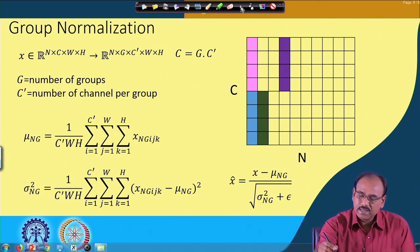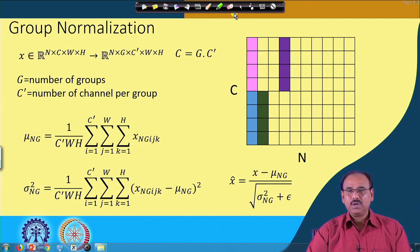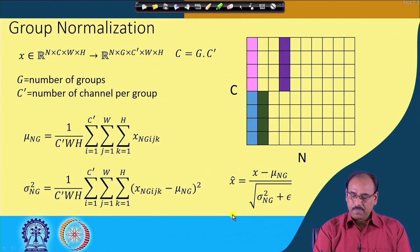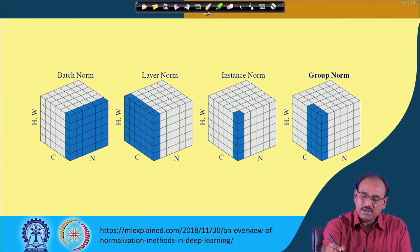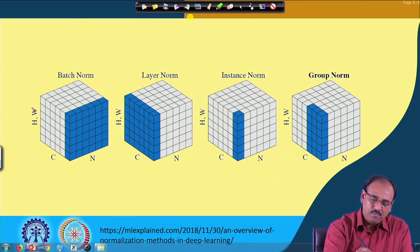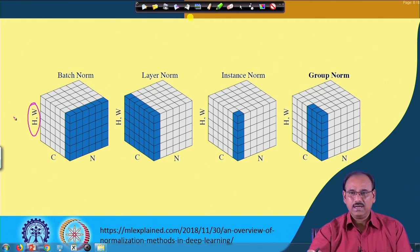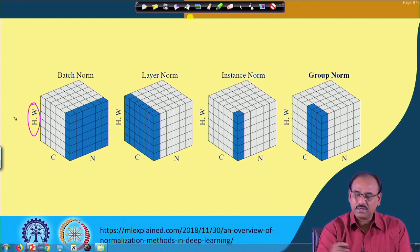These are the different normalization techniques that can be employed to address the covariate shift problem. There is another way of representing batch norm, layer norm, instance norm, and group norm in a three-dimensional form where W and H are collapsed into one dimension, whereas the earlier discussion used a two-dimensional representation with each cell being a W × H matrix.